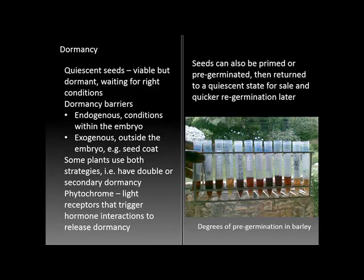In order to germinate, seeds have to break the condition built into them called dormancy. While they're going through that period, they're called quiescent — viable but dormant, waiting for the right conditions to trigger germination. Dormancy barriers are of several varieties, but the most common are endogenous, based on conditions within the embryo, or exogenous, based on conditions outside the embryo — especially hard or impervious seed coats protecting the seeds from environmental conditions. Many plants use a combination of both, and have double or secondary dormancy characteristics.